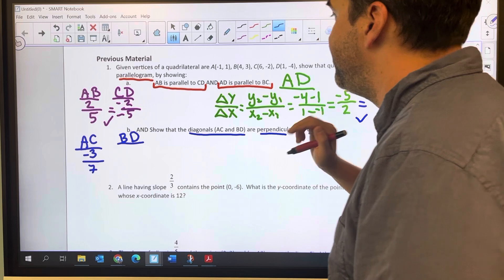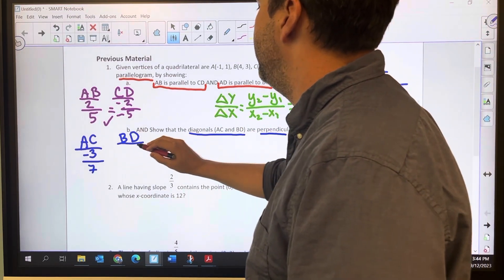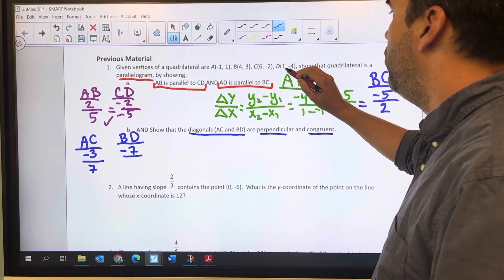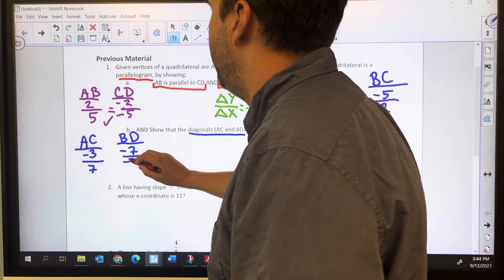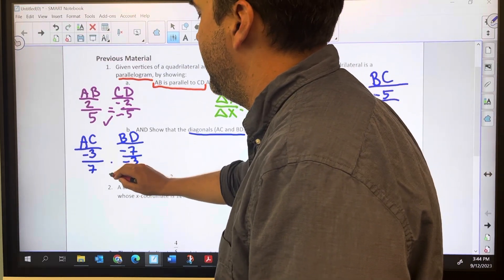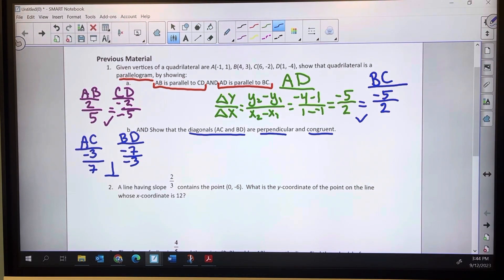So BD, we've got negative 4 minus 3, which is negative 7, and then 1 minus 4, which is negative 3. And again, negative over negative is positive. So yes, we have perpendicular there because we have opposite reciprocals.